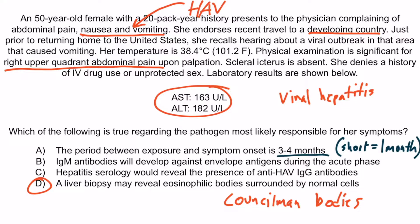Choice B is wrong because hepatitis A does not have an envelope — remember all those naked pigs? If you chose this answer, you may have been attracted to it because IgM antibodies are present during the acute phase of hepatitis A, and that's true. However, they're not directed against the envelope because hepatitis A doesn't have an envelope. And lastly, choice C is wrong because anti-hepatitis A virus IgG antibodies indicate immune status — remember that little pig who built a shelter out of IgG antibody shingles? So if this patient has an acute hepatitis A infection, she likely doesn't have IgG antibodies yet. And that should be all you need to know about hepatitis A.